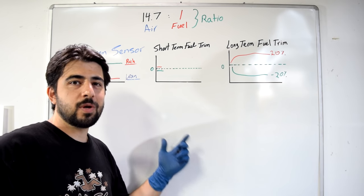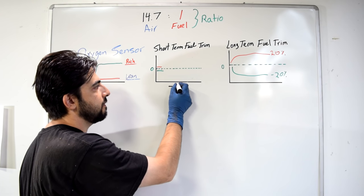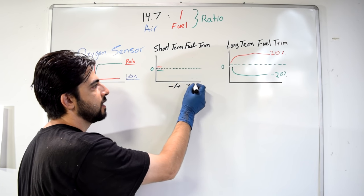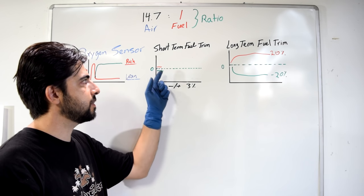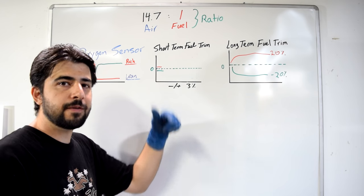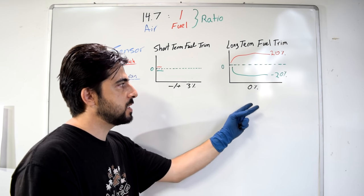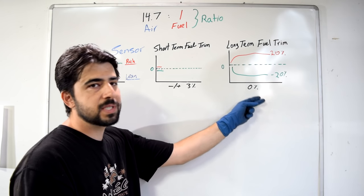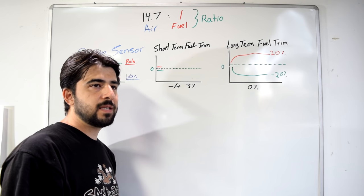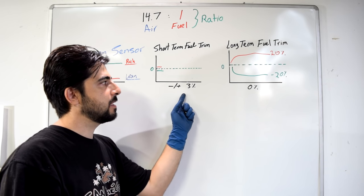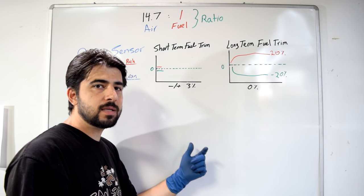Some good numbers to know: for short-term fuel trim, anything from negative to positive 3 percent is considered okay — going up and down between negative 3 and positive 3 is fine. For long-term fuel trim, you want to see it staying steady at or near zero percent; a few percentage points up or down is not a big deal. As a basic rule of thumb, if you add these two percentages together you don't want the total to exceed negative or positive 10 percent.